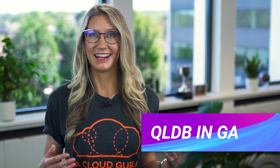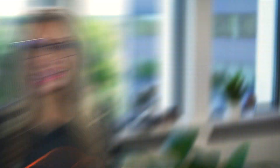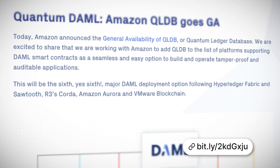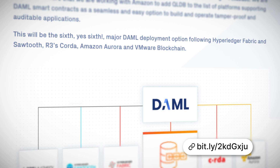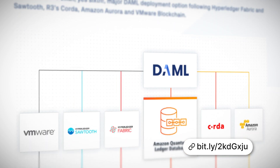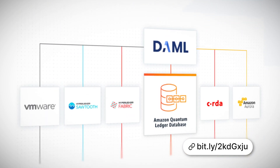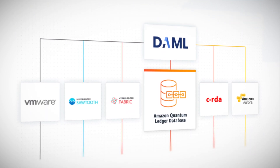Amazon Quantum Ledger Database, or QLDB, is now in general availability. If you haven't heard about QLDB before, it was announced at re:Invent 2018 and it's a fully managed ledger database which provides an immutable history of all committed changes to your data. This history is kept in the form of a journal which cannot be updated, altered, or deleted.